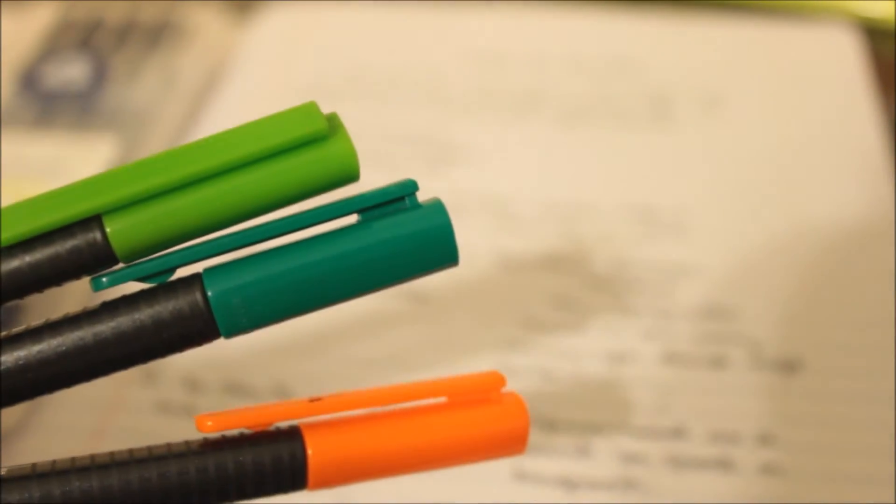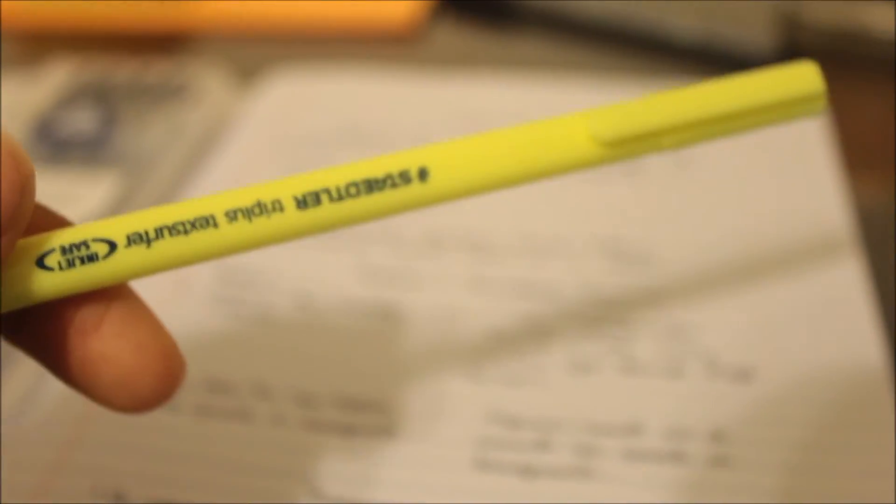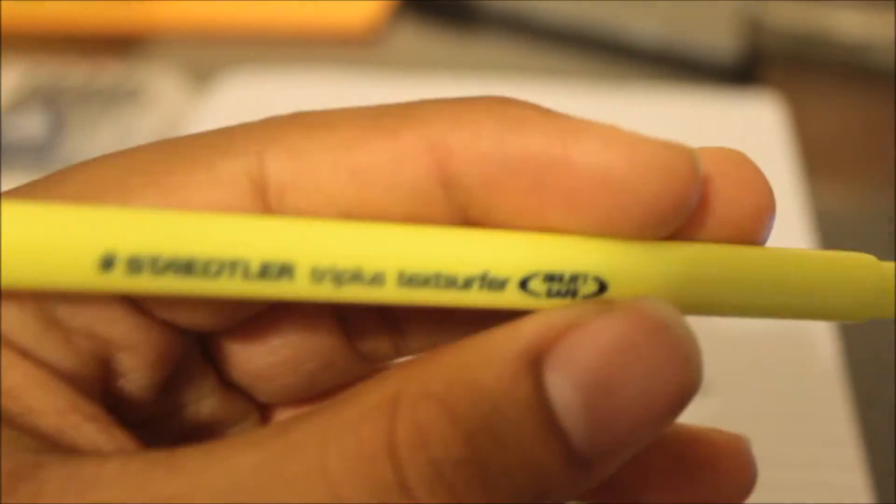But for economics, I only use three colors being evergreen, green, and orange. And I'm also using my Stedler Triplus text surfer to highlight any definitions that I come across.